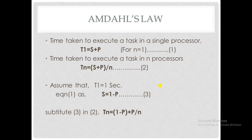Assume T1 equals 1 second. Equation 1 can be rewritten as 1 equals S plus P, therefore S equals 1 minus P. Substituting equation 3 into equation 2, we get Tn equals 1 minus P plus P divided by n. This is the total time required to finish a task by n processors, which depends on both the serial and parallel parts of the program. This is Amdahl's Law.